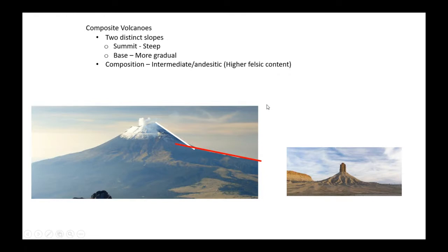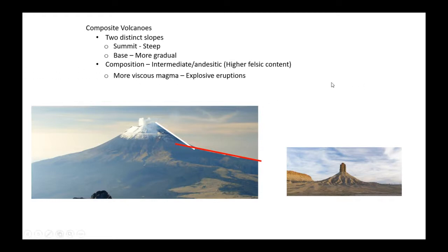Composite volcanoes have an intermediate and acidic composition, so they have a higher felsic content. That higher felsic content makes the magma more viscous. Gases don't escape as easily, and you have the potential for explosive eruptions, pyroclastic flows, and a lot of death and destruction with these types of eruptions.